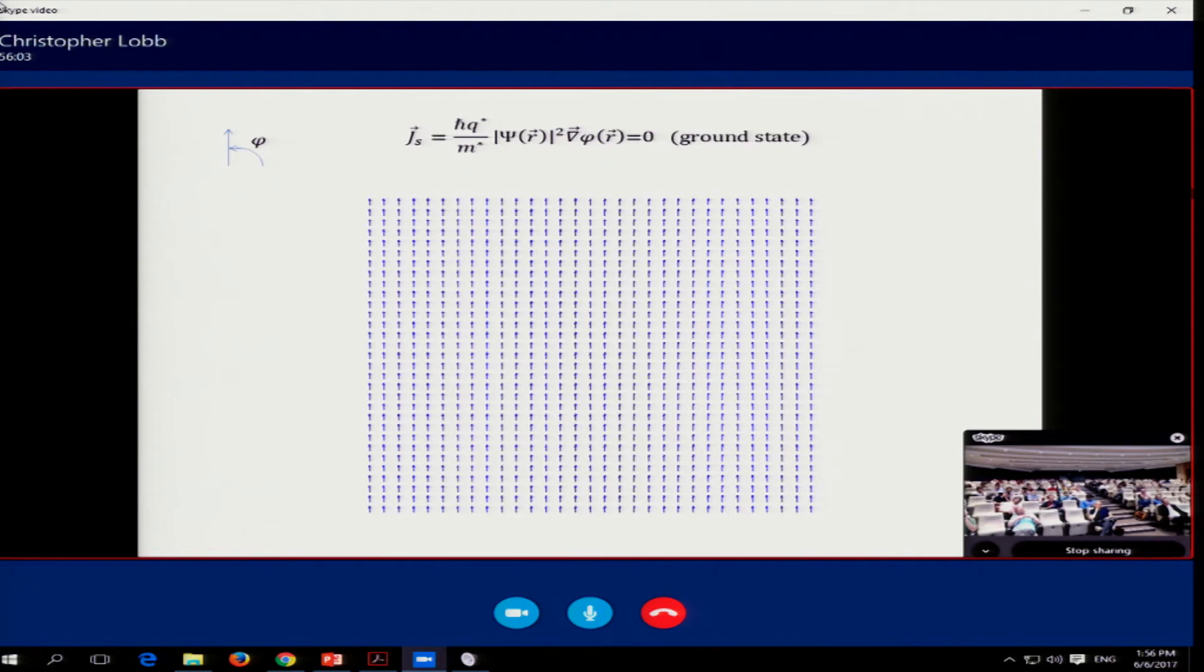So I just pick a bunch of points in the superconductor, and I can draw a little arrow. At each point, the length of the arrow will tell me the magnitude of psi squared, the superfluid density, and the direction that it makes with the x-axis will tell me the phase. So it's very much analogous to a magnet, but with very different interpretation of what the things mean. So what I've drawn here is a ground state. All of the arrows have the same lengths. They're all pointing in the same direction.